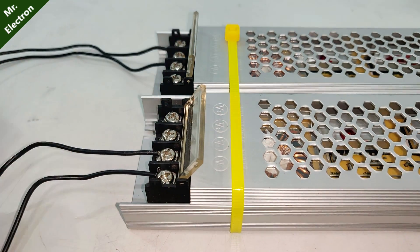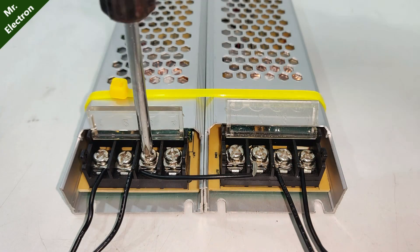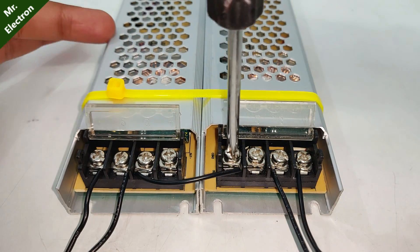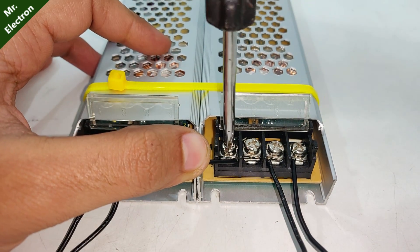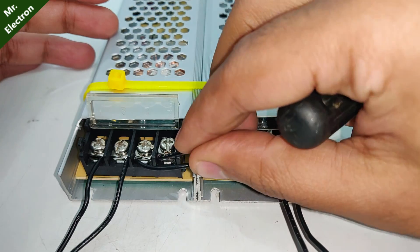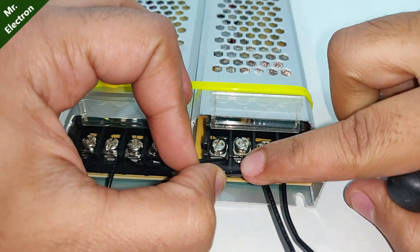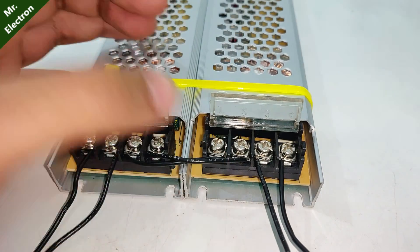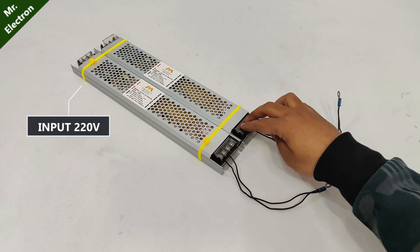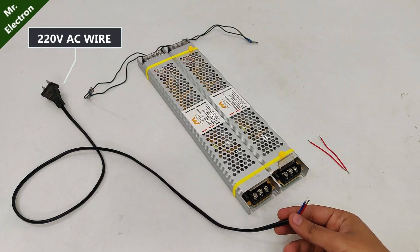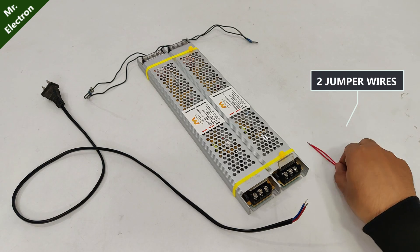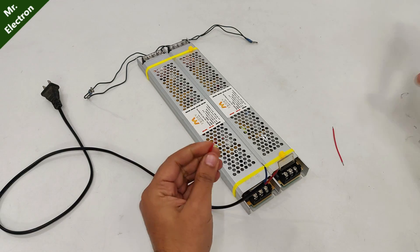After that, take two jumper wires and connect them as shown, thus completing the connections for the output side. Moving on to the input 220 volts side, now take the 220 volts AC wire and two jumper wires and couple them as shown.